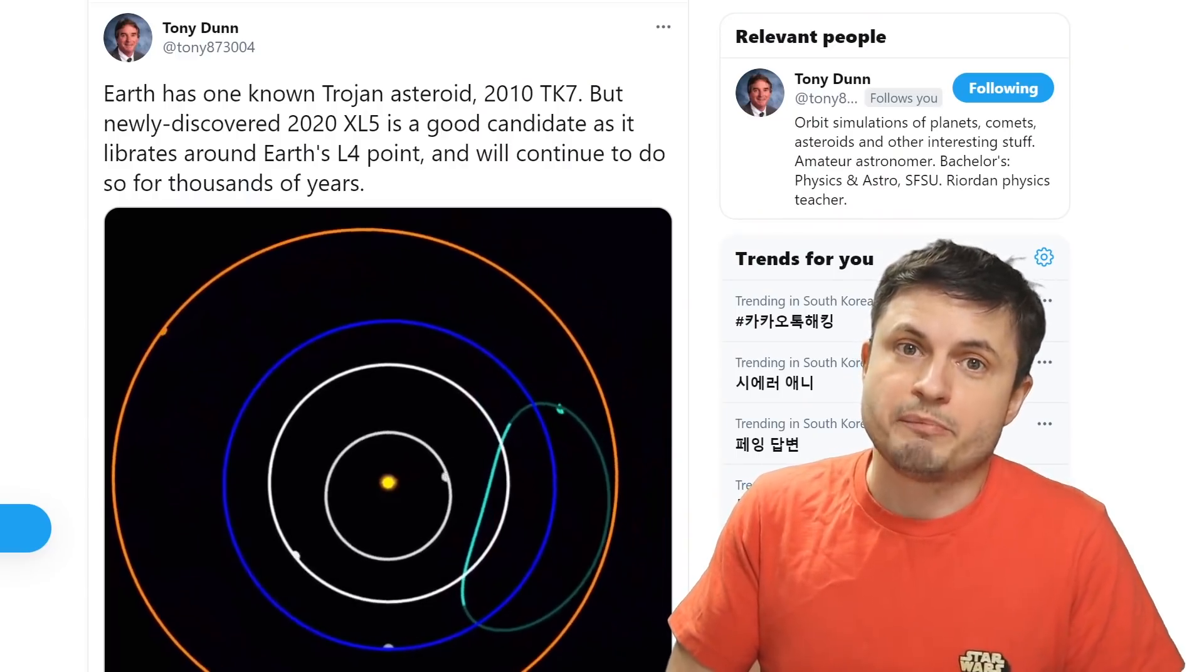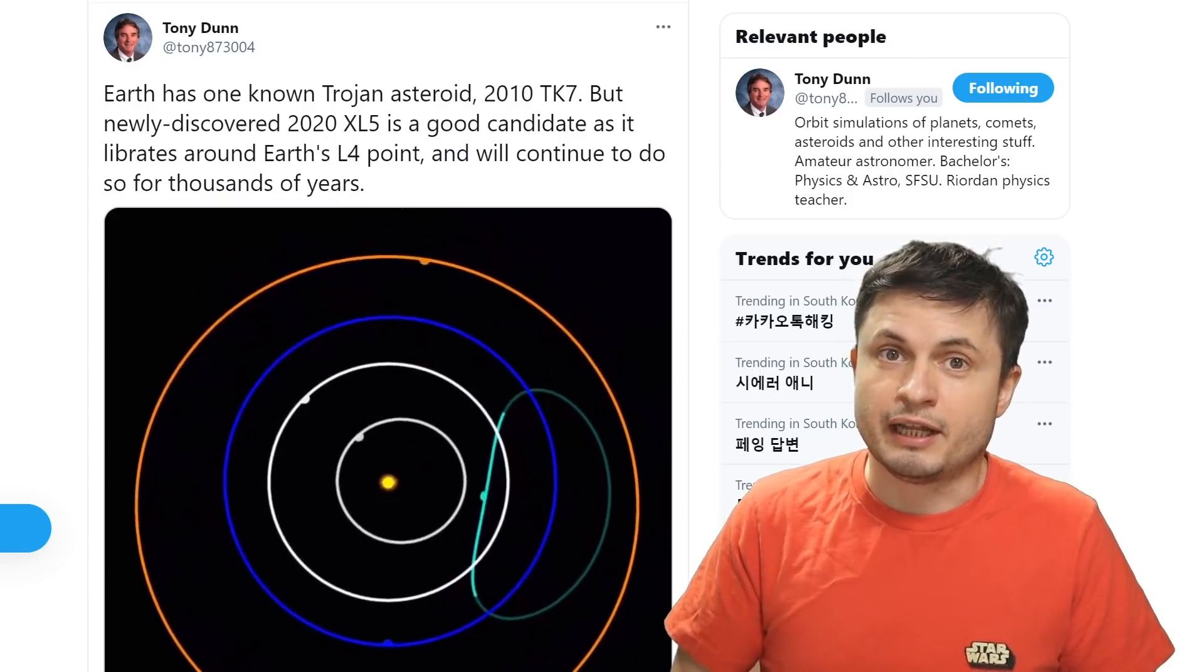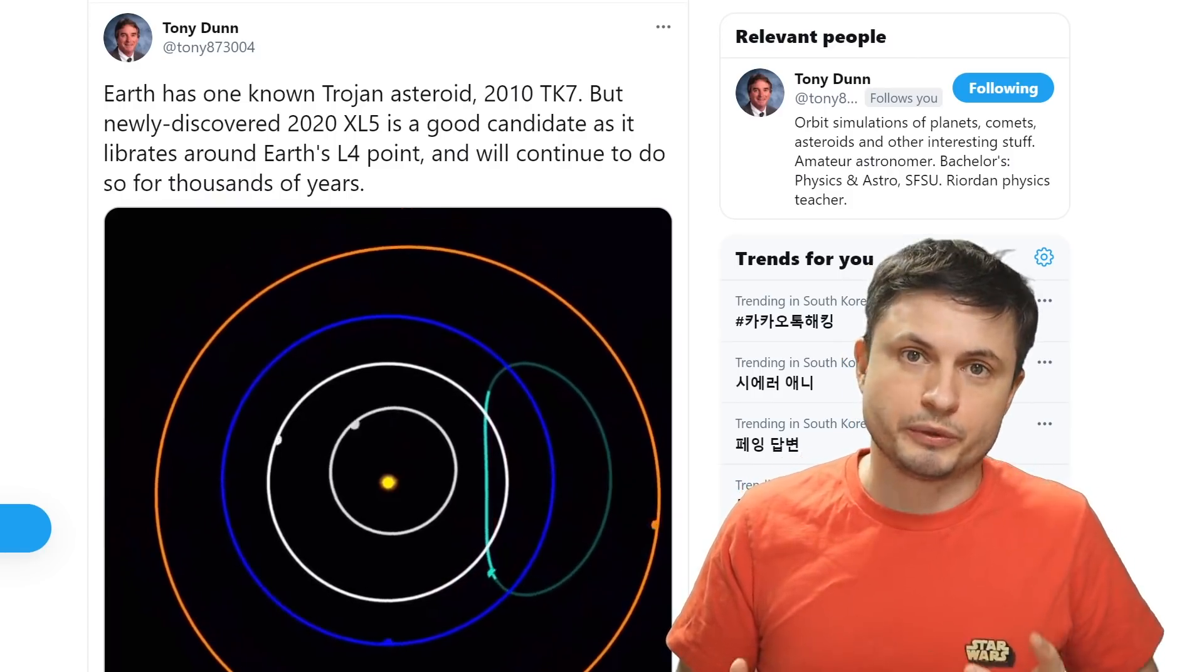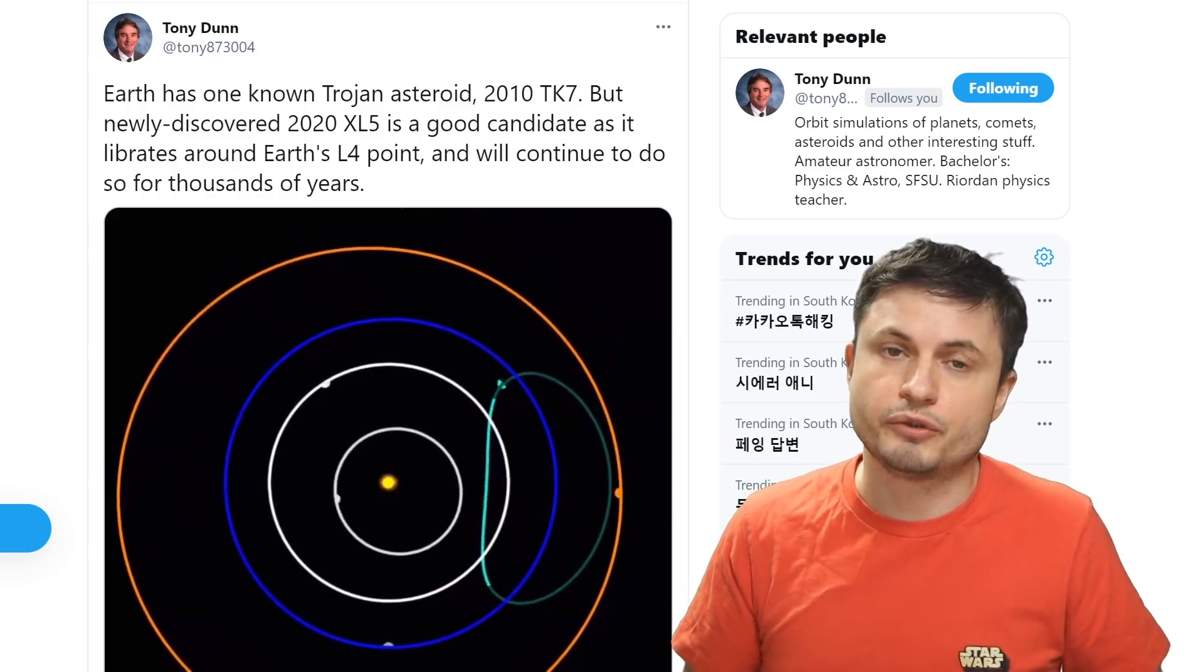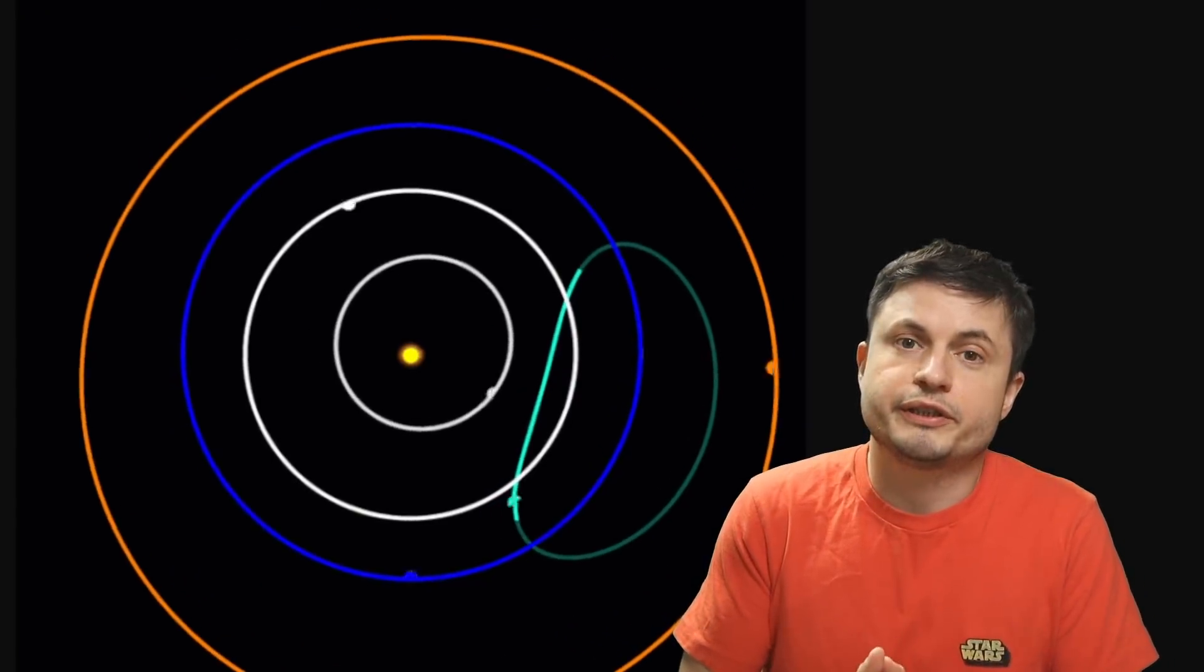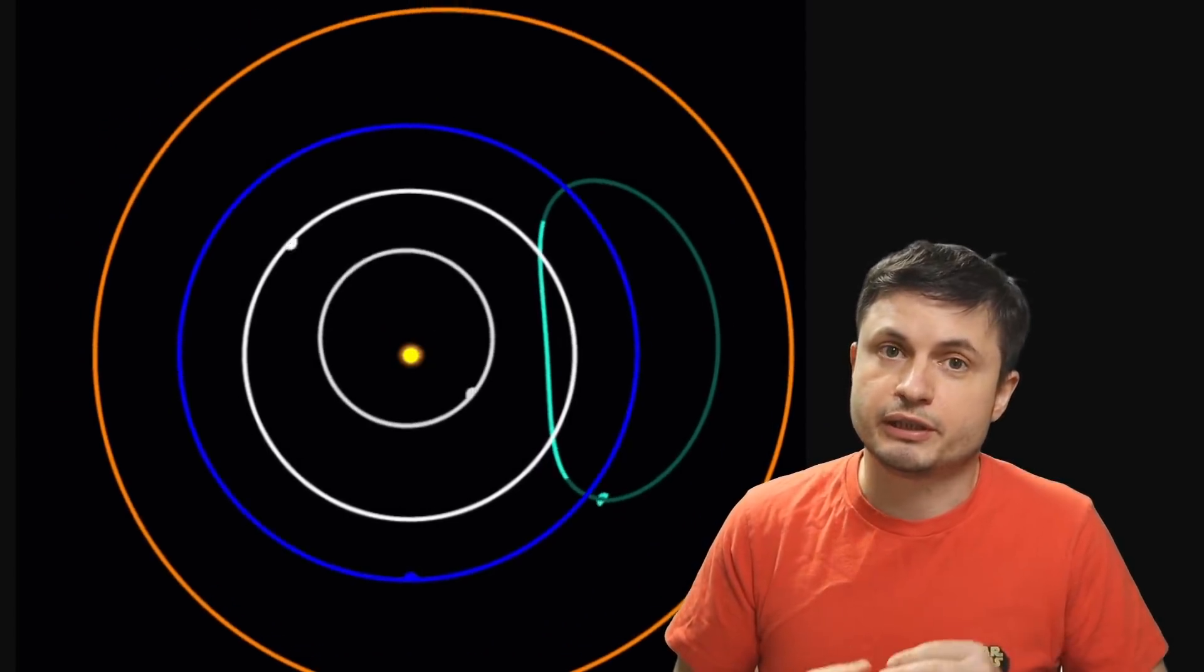I'm going to explain what trojans are in a few seconds, but what's important is that it looks like we found another one. There seem to be two trojans that planet Earth has, and that is actually kind of fascinating. Like so many other amazing discoveries, this one starts on Twitter. The amazing amateur astronomer Tony Dunn posted this beautiful picture you see right here that shows us the potential orbit of this incredible new discovery.